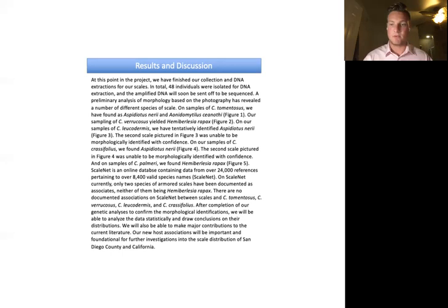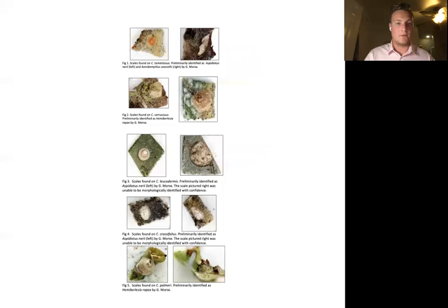However, a preliminary analysis of the photography has allowed us to identify a number of scales that we collected from our samples. Here in Figure 1, we can see that scales found on tomentosus included Aspidiotus nerii and Aonidiella ceanothi.